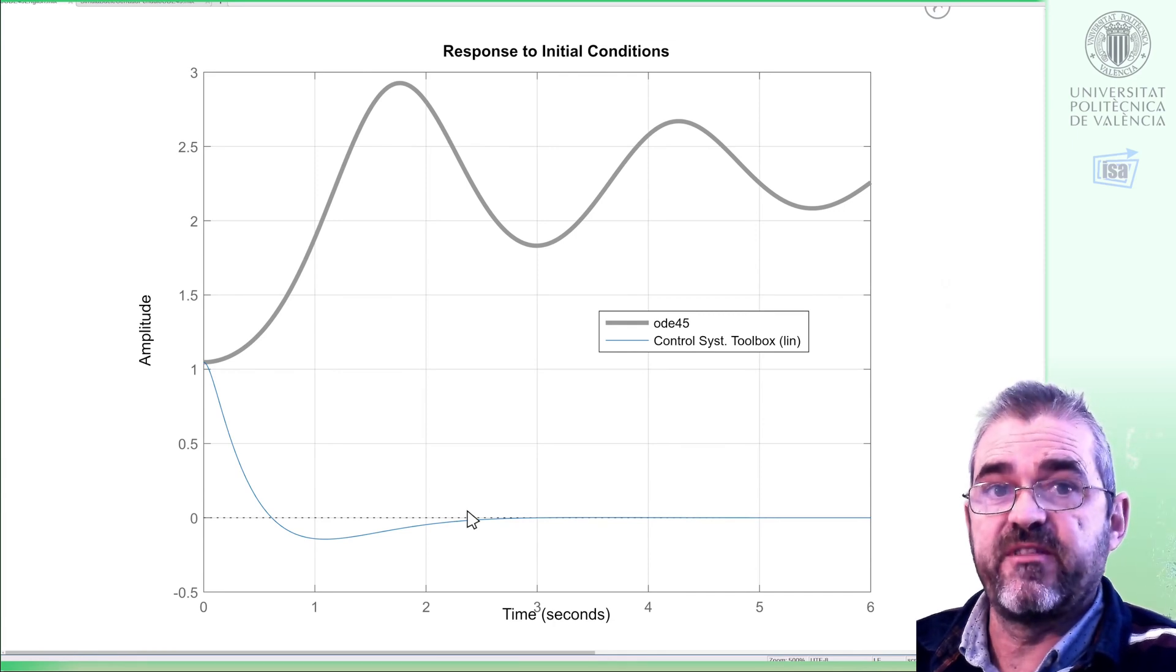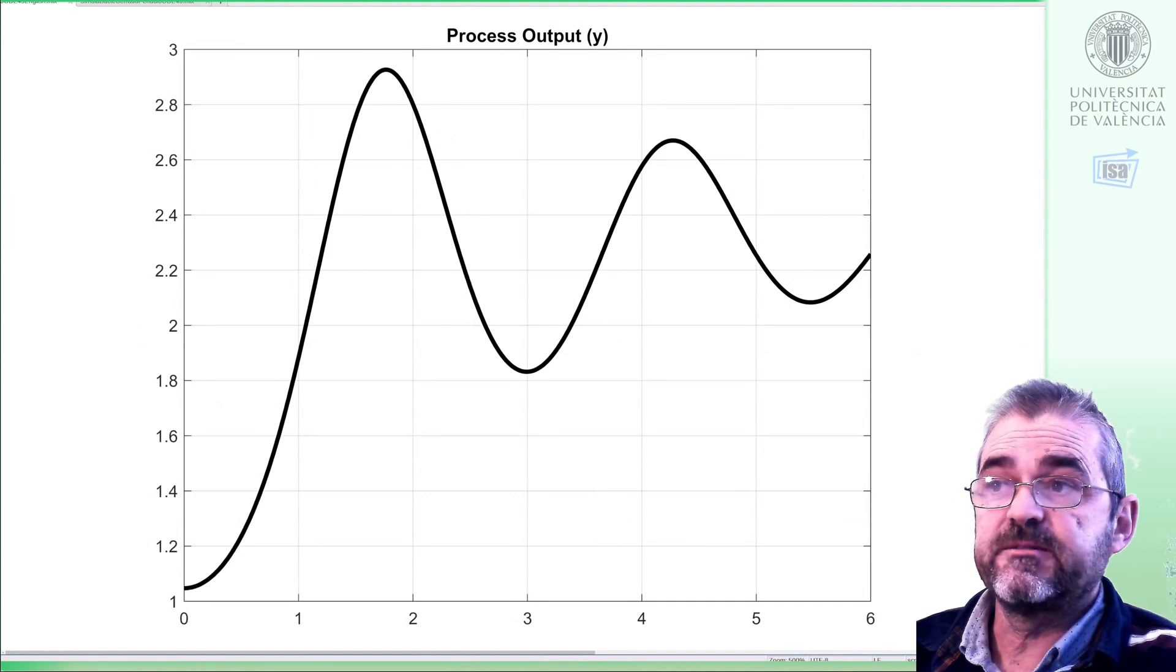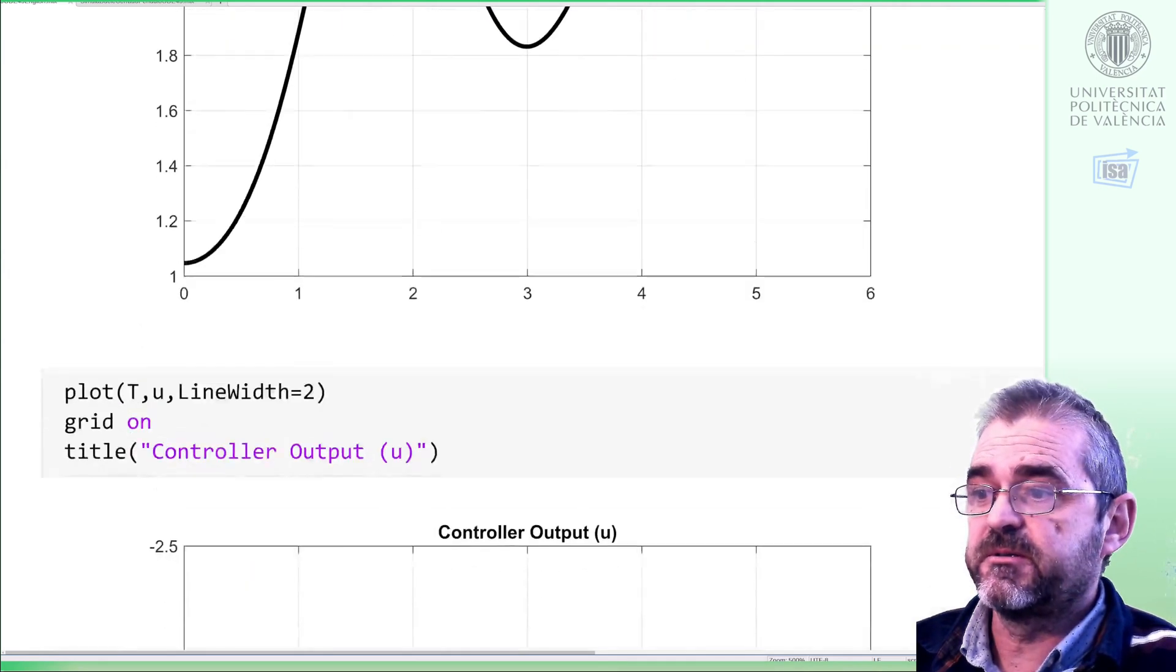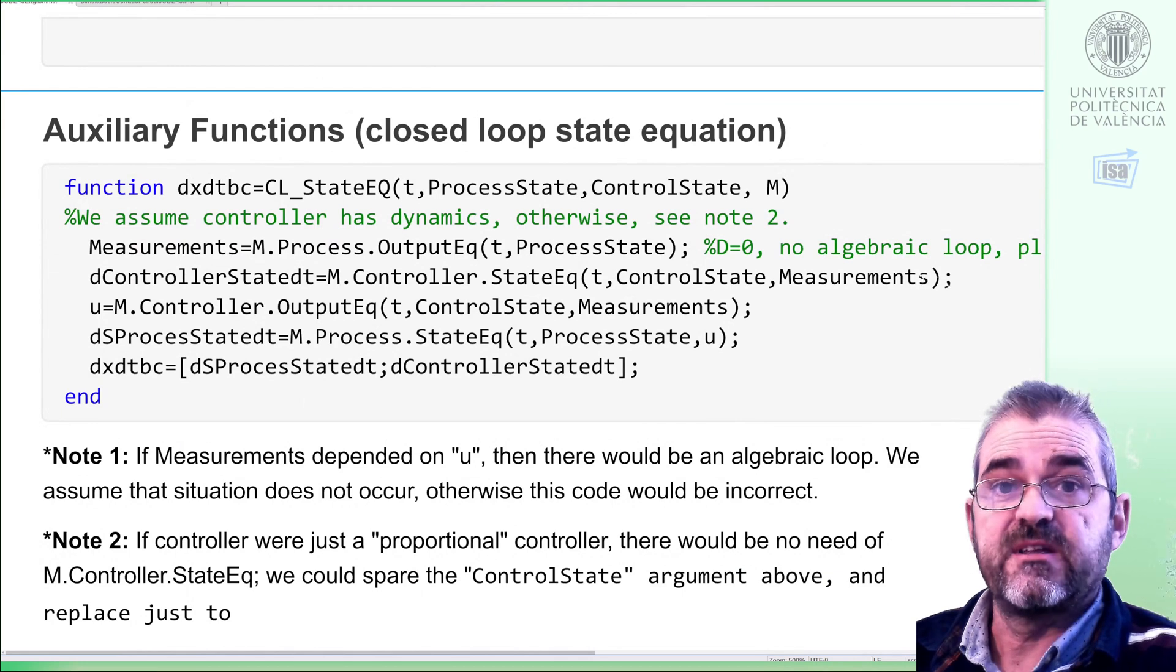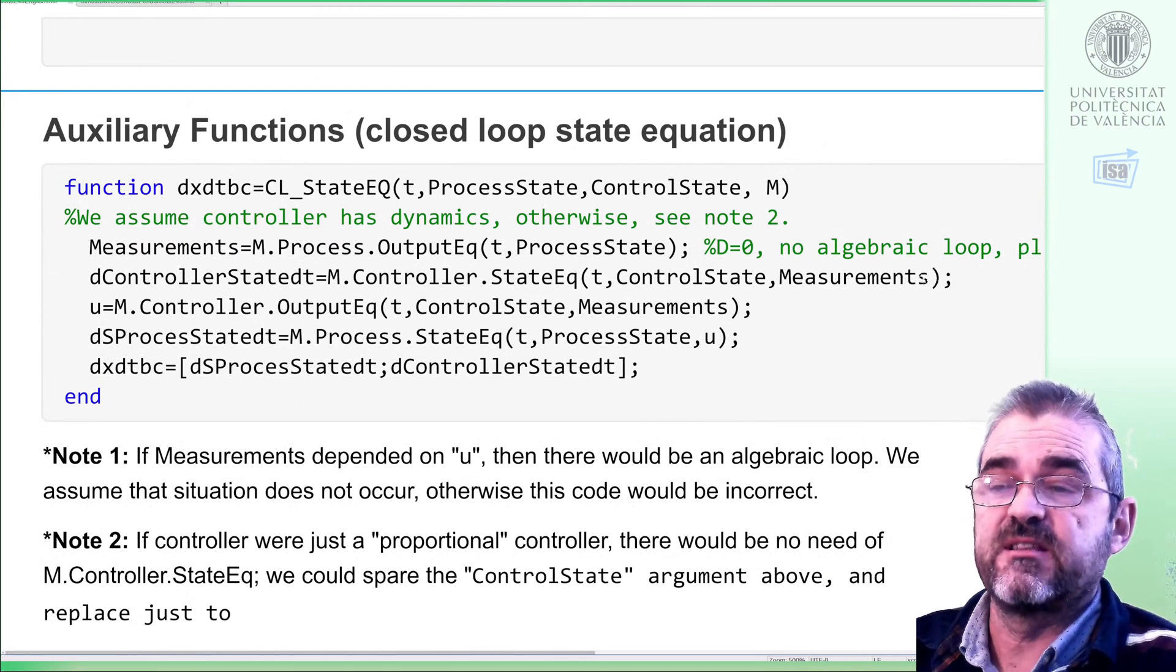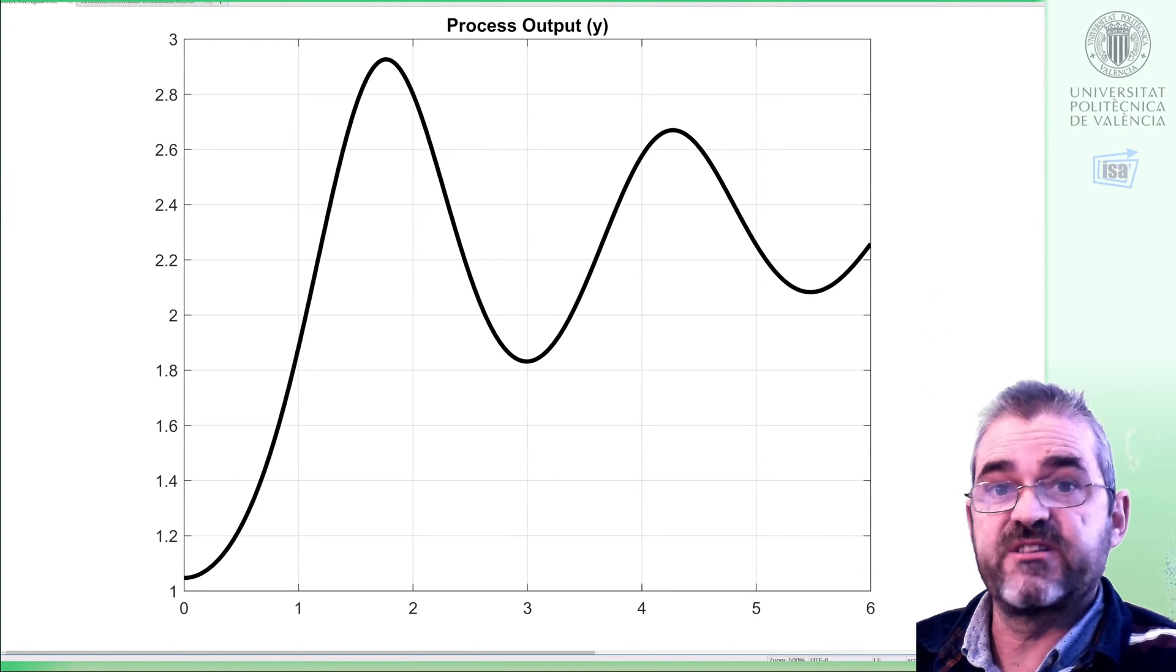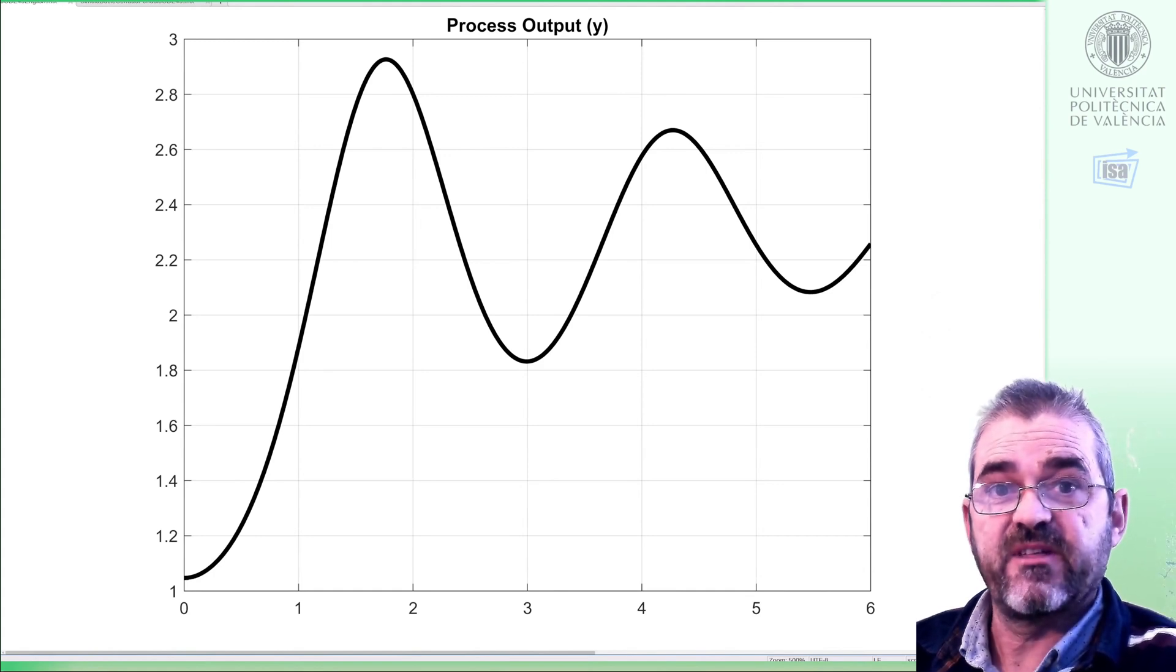So we will finish our video here. Let us conclude. In this video we have learned how to encode process and controller state and output equations. We have also learned how to join this process and controller state space models in a joint closed loop state equation, so we used ODE45 to simulate the process output without the need of Simulink. So with this, we end this video. Thanks for watching.